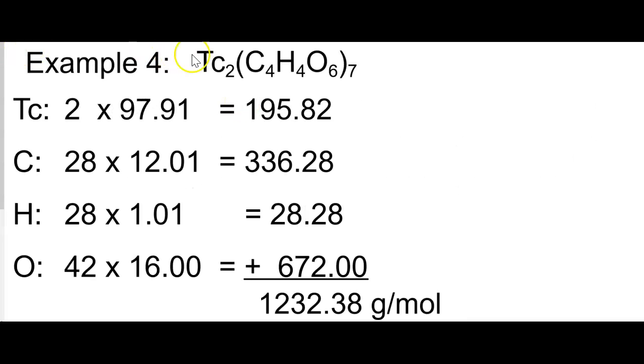Example four, we have Tc2, parenthesis C4H4O6, parenthesis 7. So we have two Tc's, 28 carbons (7 times 4), 28 hydrogens (7 times 4), and 42 oxygens (7 times 6). Look up their molar masses, get our subtotals, and our grand total. This is our molar mass.